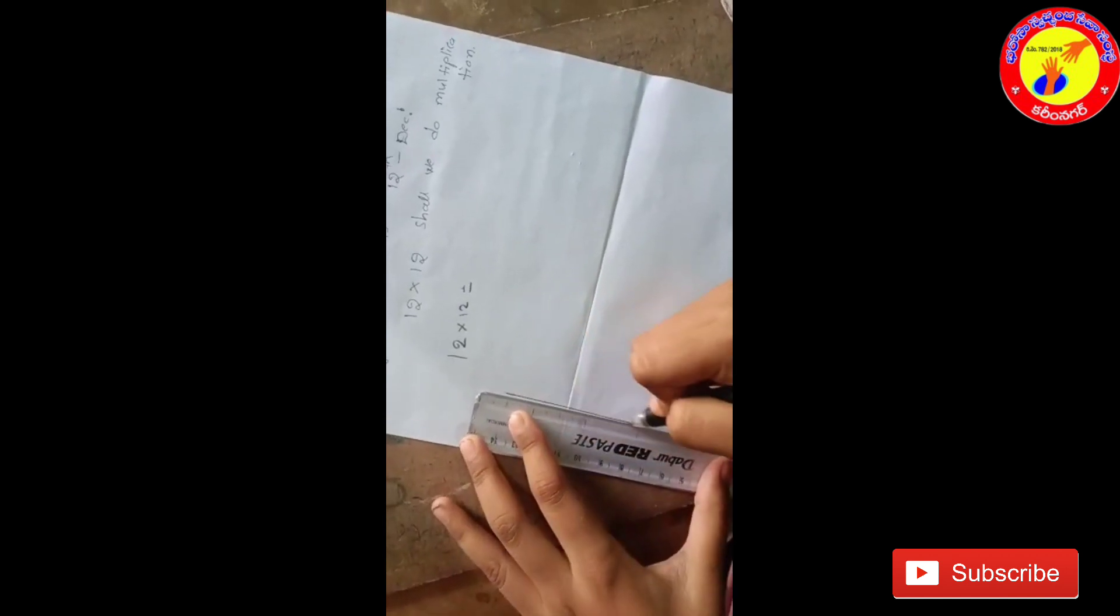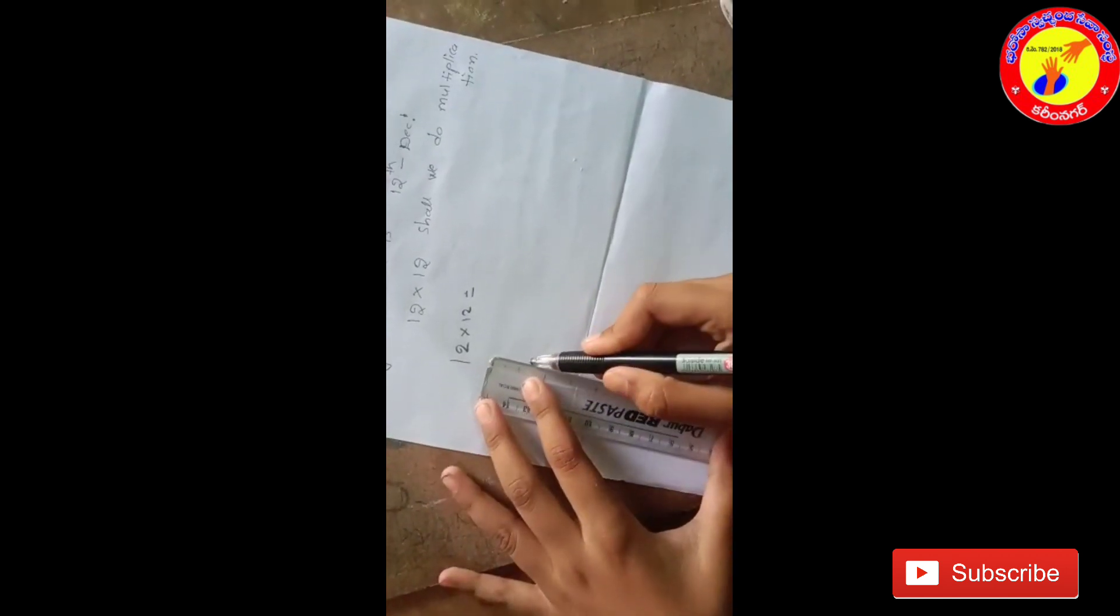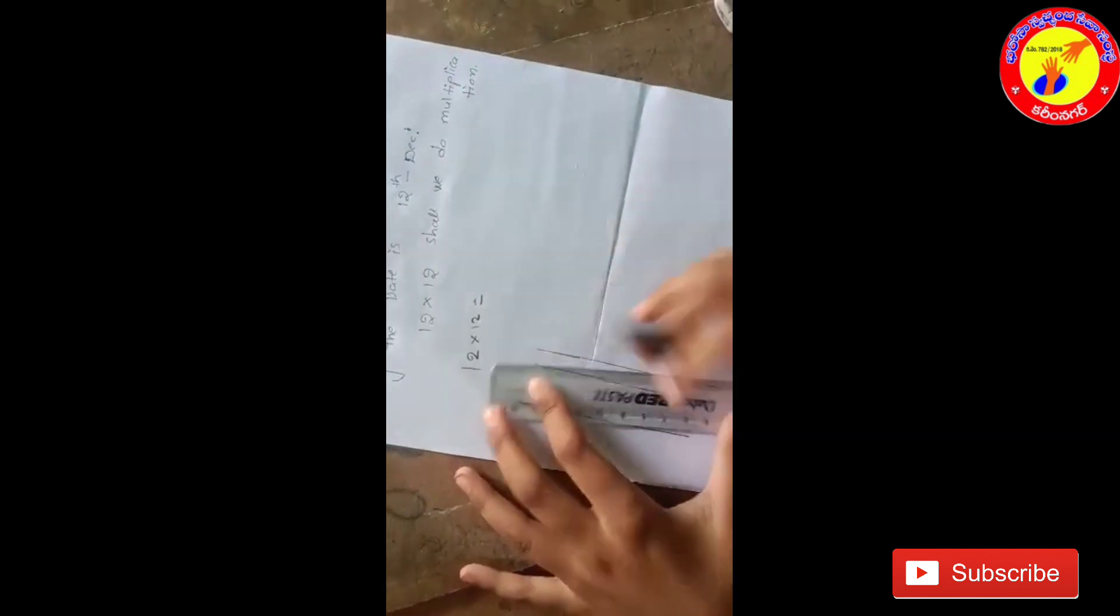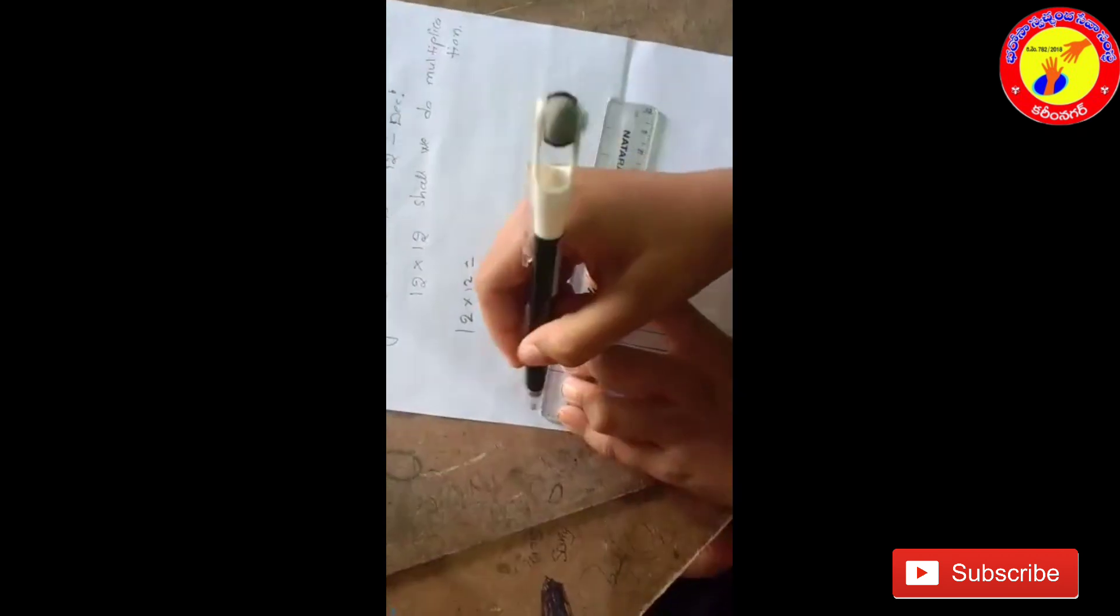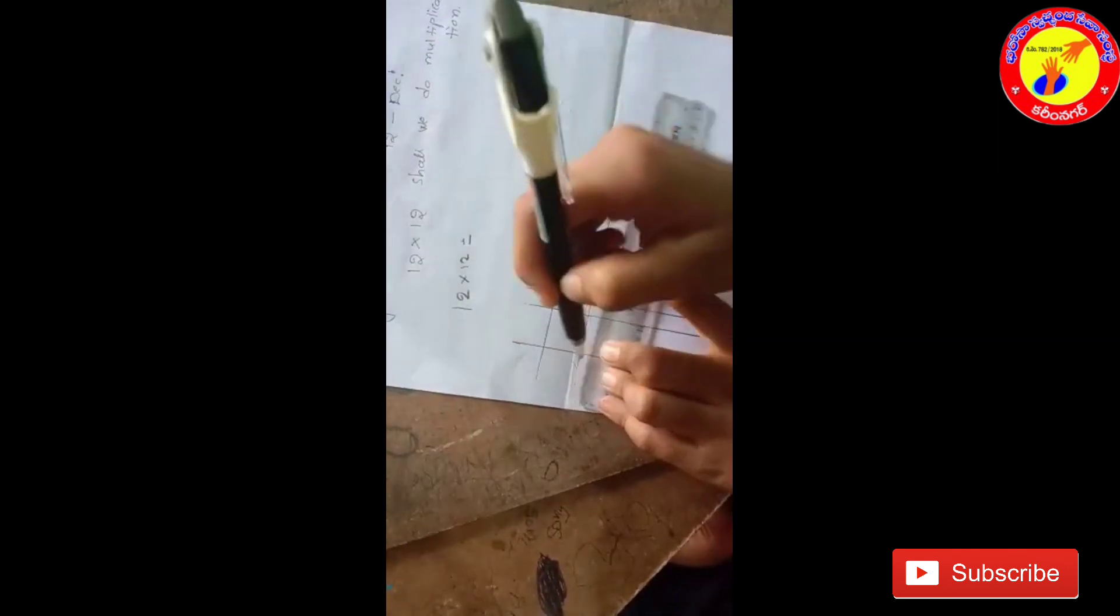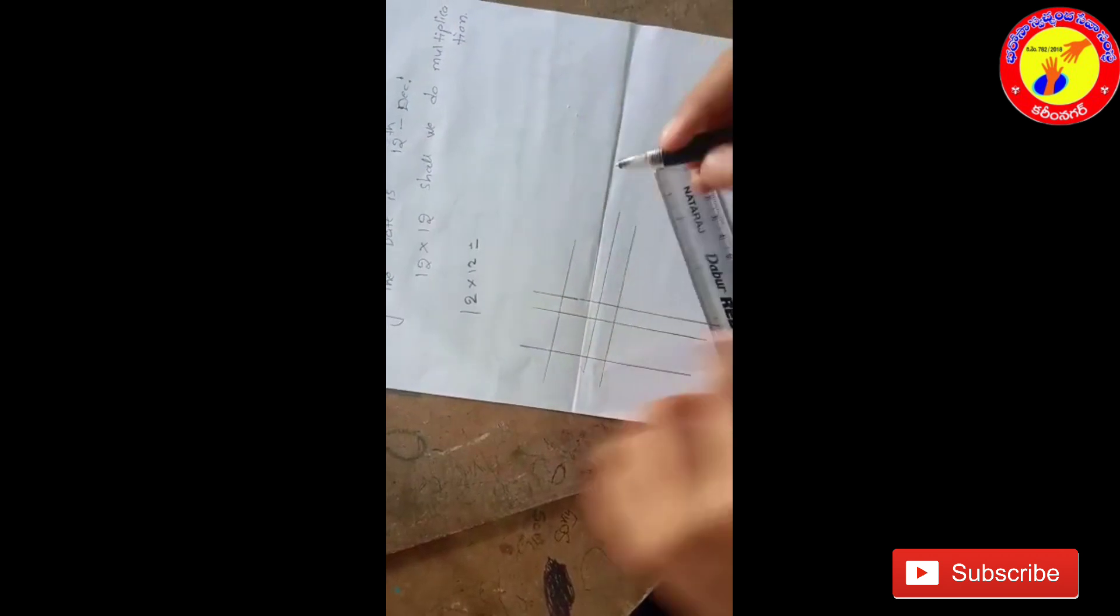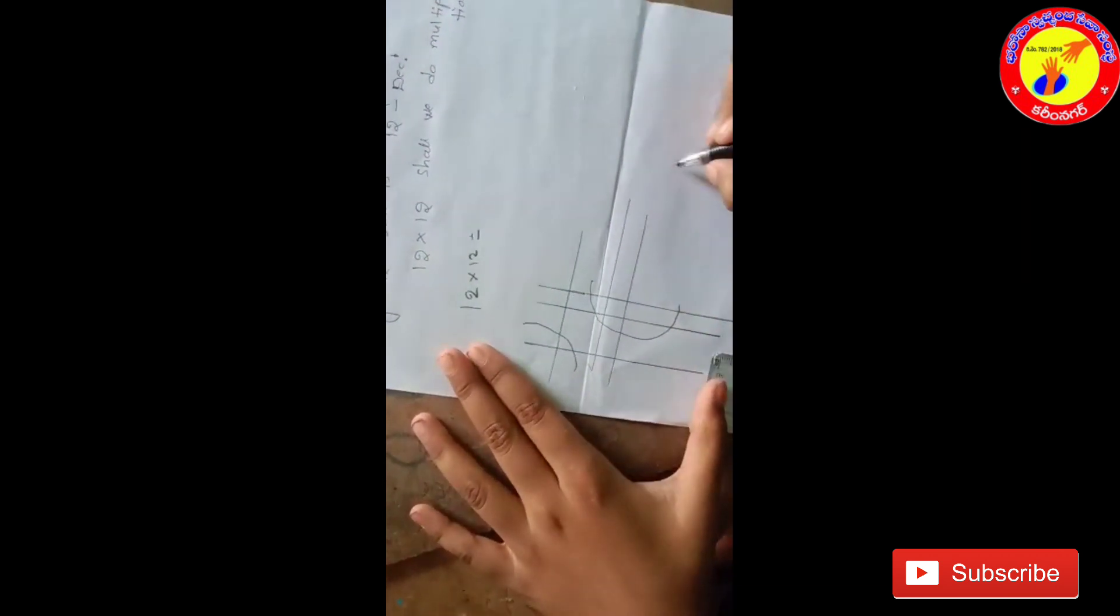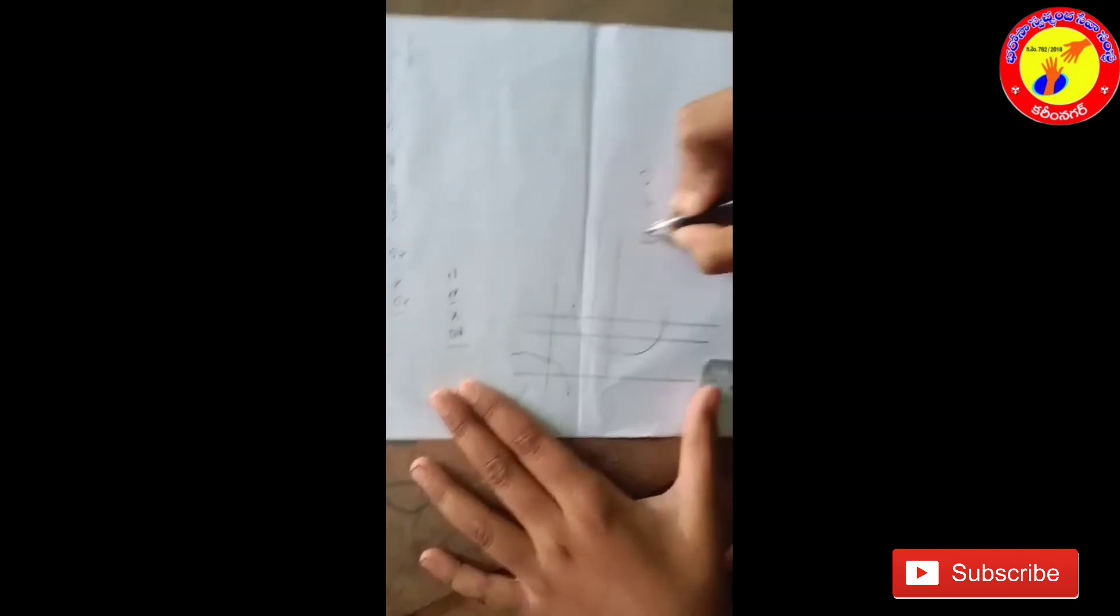We have to draw one vertical line, next two vertical lines. Next, we have to draw one horizontal line, next two horizontal lines. Label them: ones, tens, hundreds.